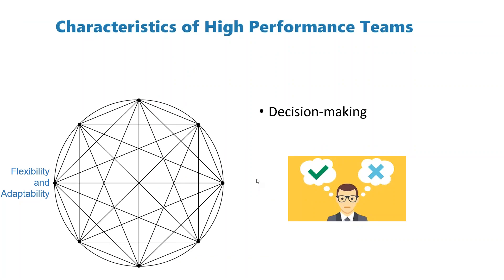A high-performing team is also one that's flexible and adaptable. A team that's been working together for 20 to 30 years is probably not terribly flexible and adaptable — they're more likely predictable and stable. One thing I strongly recommend is to articulate clearly the area where you expect your team to be flexible and adaptable. You need to create that space for people because they're not mind readers and won't know what that is unless you explain it.